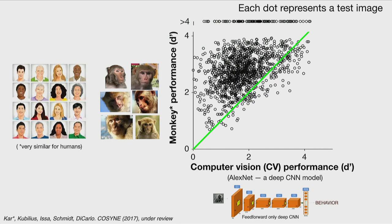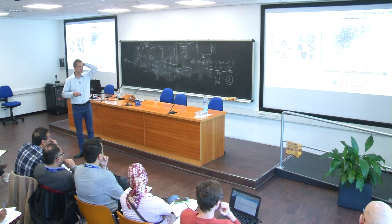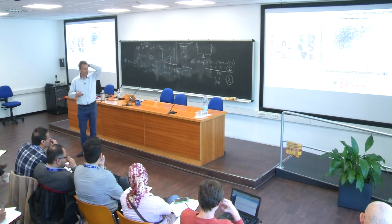This is an important plot to understand. The x-axis is computer vision system performance — this was AlexNet when we started — in D-prime units, where 0 is 50% accuracy and values above 4 are roughly 98% accurate. The y-axis is monkey performance. Each dot on this plot is an image, in the same D-prime units. What you see is that monkeys, or primates in general, are on average better on these images — the points are above the diagonal.